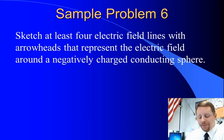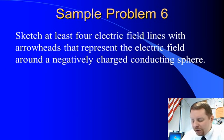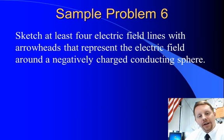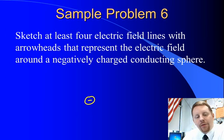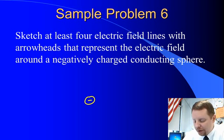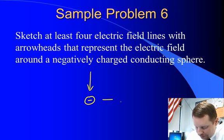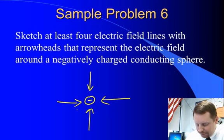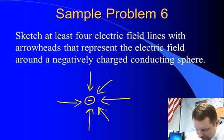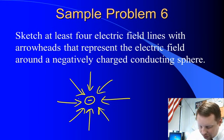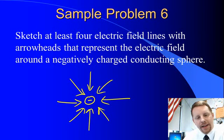Let's try one last problem: sketch at least four electric field lines with arrowheads that represent the electric field around a negatively charged conducting sphere. We know electric field lines come in to negative charges. Drawing four lines — one, two, three, four — evenly distributed and all pointing in toward that negative charge. You could add more as long as they're evenly distributed and all going in toward the negative charge.